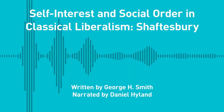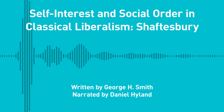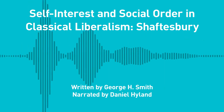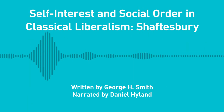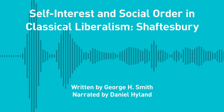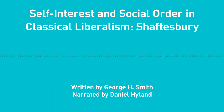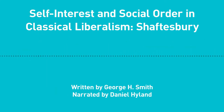Shaftesbury veered from the moral rationalism found in John Locke and later figures such as Samuel Clarke, and pioneered the school of thought known as sentimentalism, an approach that would later be developed in greater detail by Hutcheson, Hume, Smith, and other philosophers of the Scottish Enlightenment. This is not to say that Shaftesbury and later sentimentalists denigrated the role of reason in human affairs — they manifestly did not. But they also maintained that the elements of social order, such as justice and benevolence, did not originally arise from abstract philosophical reasoning.